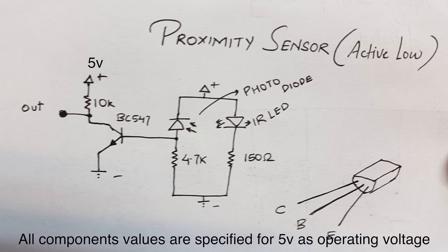...when proximity is detected, the output is low, and when there is no proximity detected, the output remains high. Depending on your requirement, you can choose either of these versions, active low or active high.